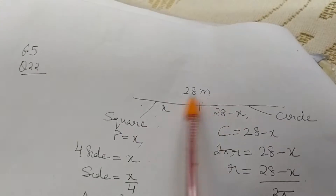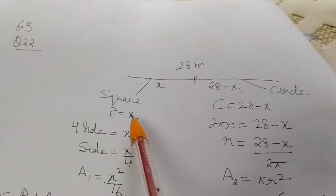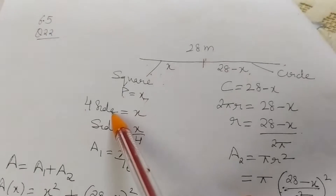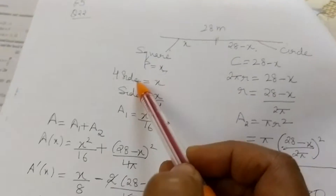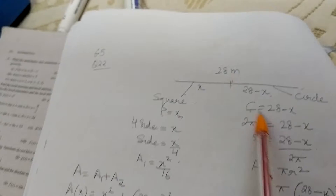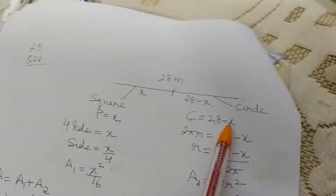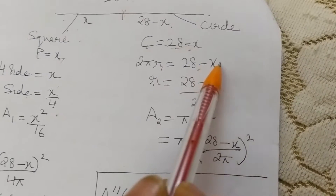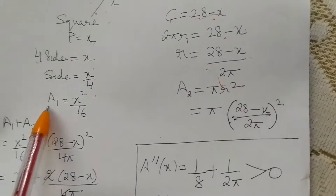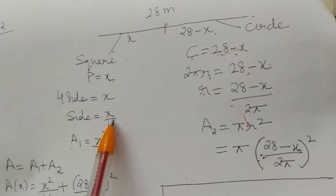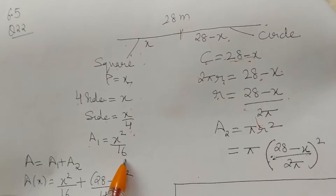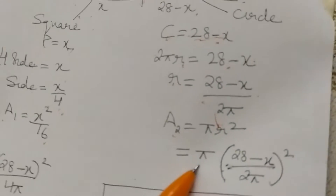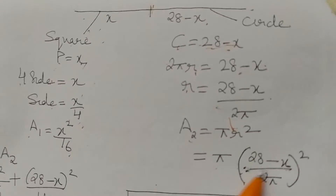The piece of length x is bent into a square: perimeter = x, so side = x/4, and area₁ = x²/16. The remaining piece, 28 − x, forms a circle: circumference = 2πr, so r = (28 − x) / (2π). Area₂ = πr² = π · [(28 − x) / (2π)]².